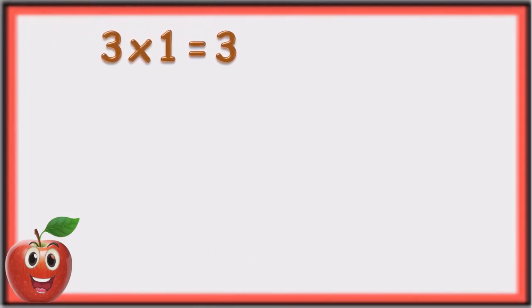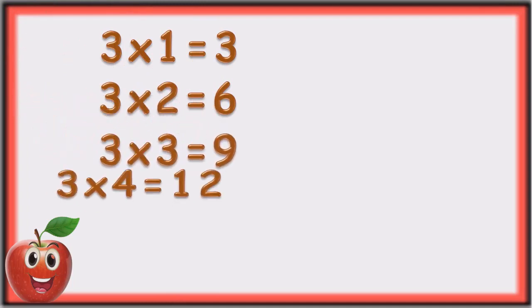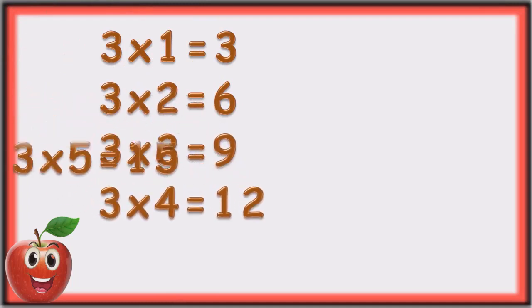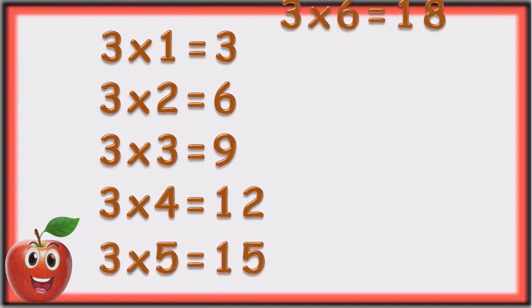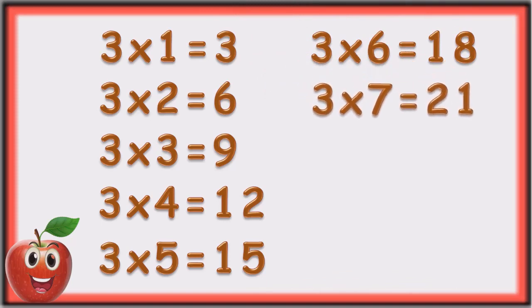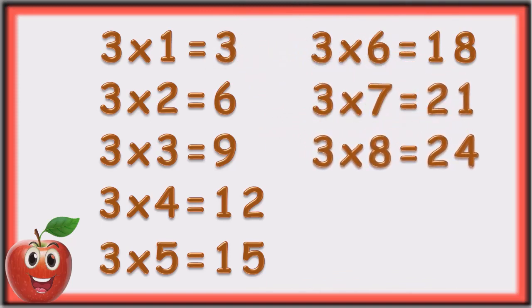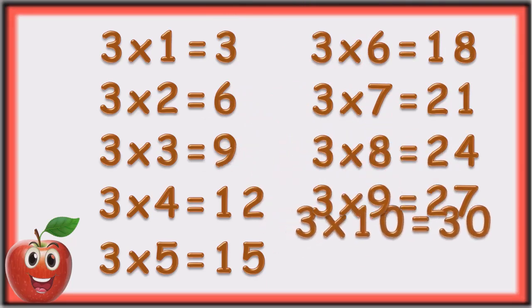Three ones are three. Three twos are six. Three threes are nine. Three fours are twelve. Three fives are fifteen. Three sixes are eighteen. Three sevens are twenty-one. Three eights are twenty-four. Three nines are twenty-seven. Three tens are thirty.